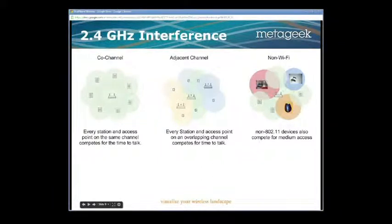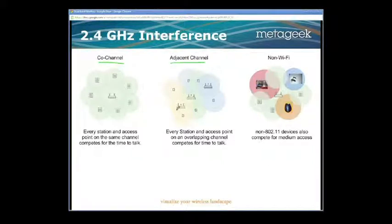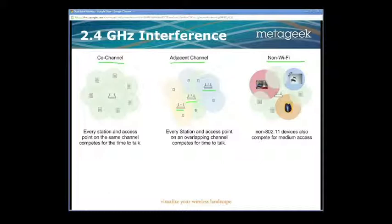To summarize, co-channel interference is where you have a lot of devices on the same channel, all having to wait for their turn to talk. Adjacent channel interference occurs when access points on channels 4, 5, and 6 all overlap each other — devices transmitting at the same time cause collisions, and because they're not on the same channel, they don't know to wait for each other. The 2.4GHz also has non-Wi-Fi interference from cordless phones, Bluetooth, microwave ovens, and wireless audio devices. These don't speak Wi-Fi, so they don't wait their turn — this causes dead zones, dropouts, and disconnectivity issues.